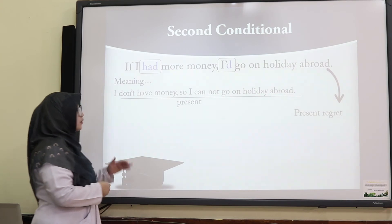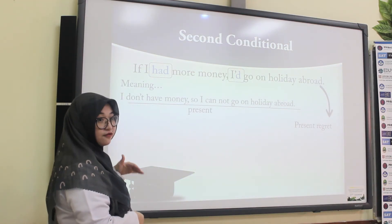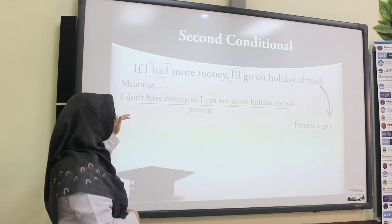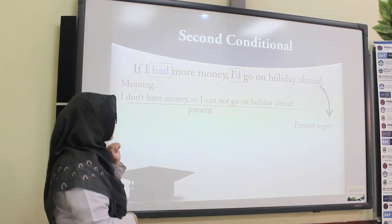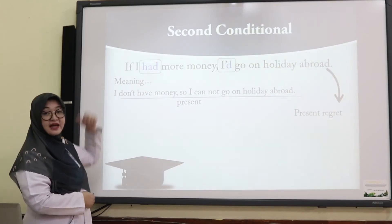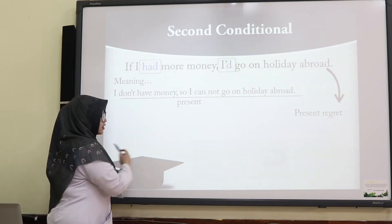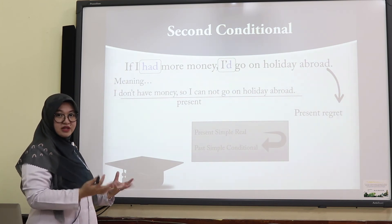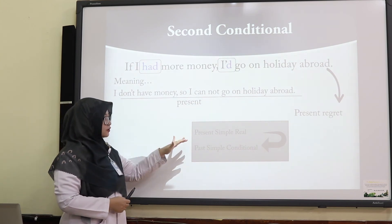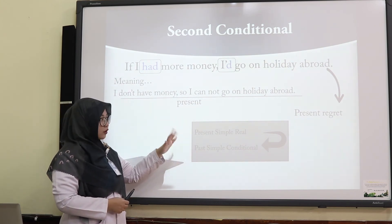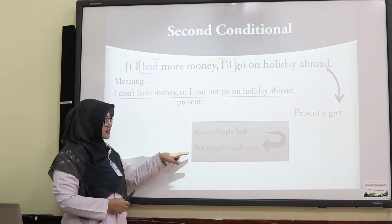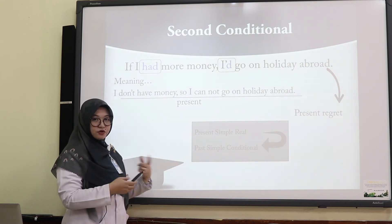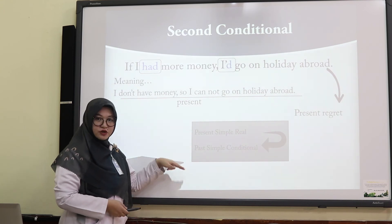Now pay attention to the use of the verb here — there is a change. In reality, the verb used is 'don't have,' which is present simple. But in the second conditional, it becomes 'had,' which is past simple. So here is an easy thing to remember: if the real situation is present simple — what we call a present regret — you have to form the second conditional in the past simple. Present simple changes to past simple.